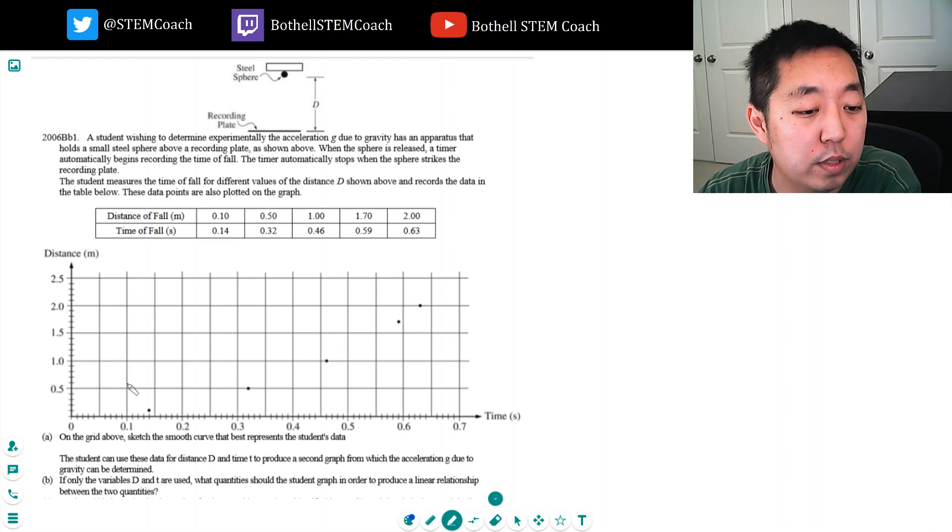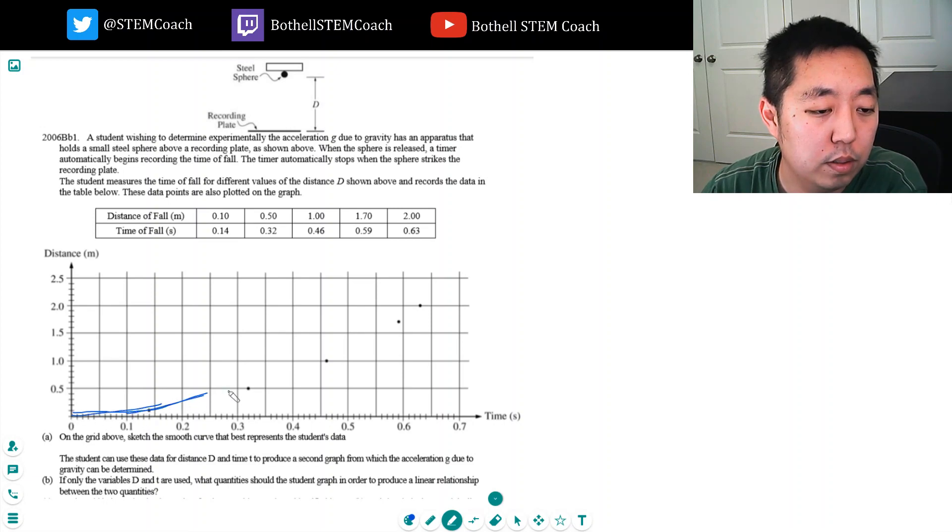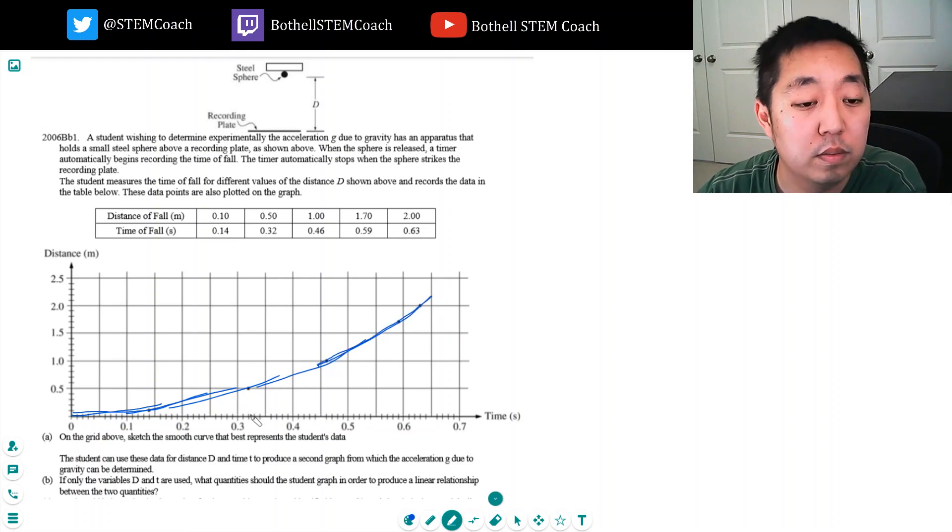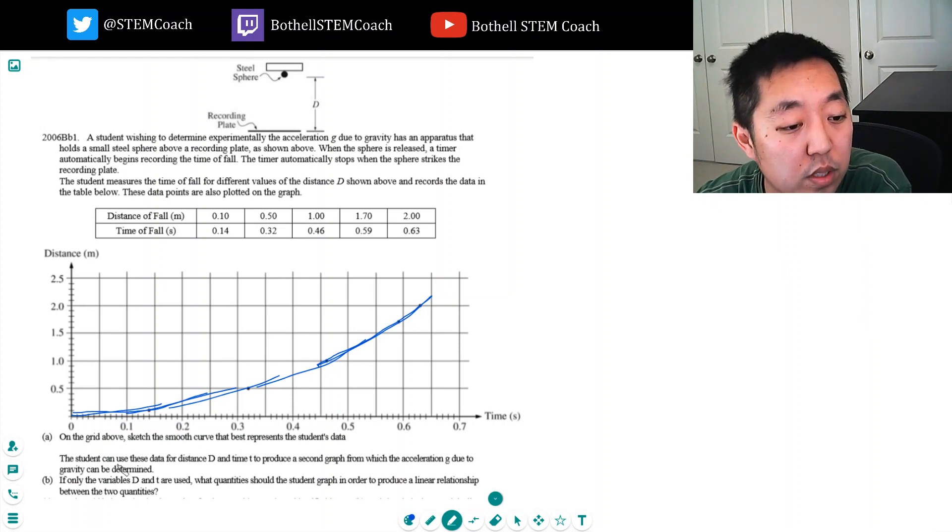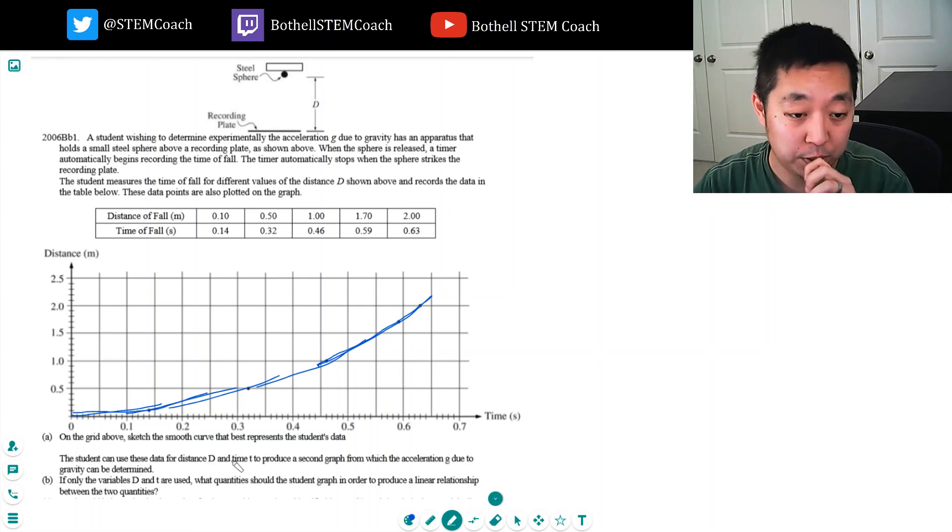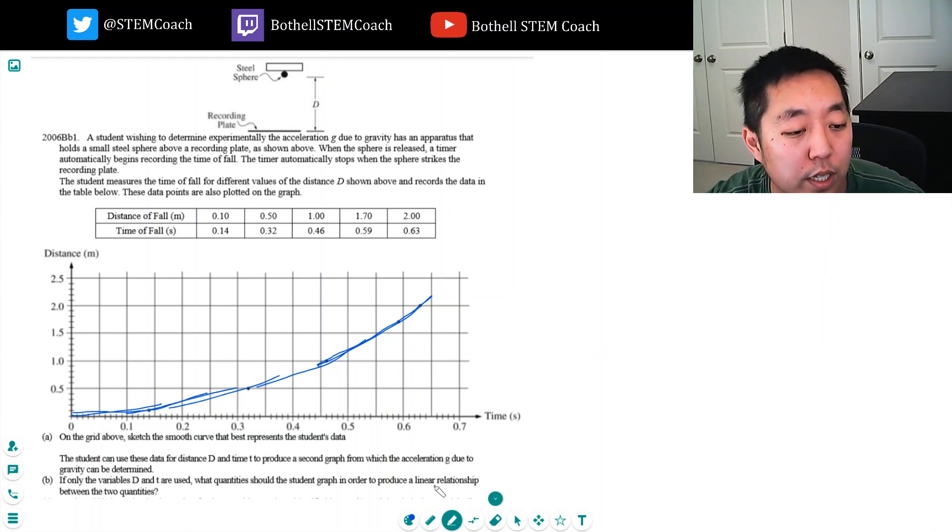On the grid above, sketch the smooth curve that best represents the data. I am terrible at sketching on my thing here, but something like that. It's kind of quadratic. The student can use this data for distance d and time to produce a second graph from which acceleration g due to gravity can be determined.